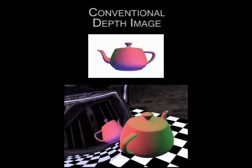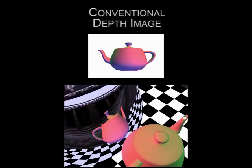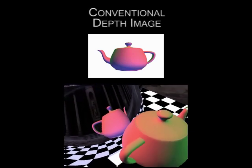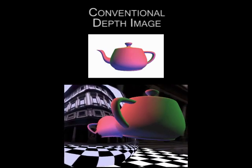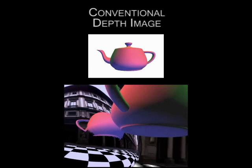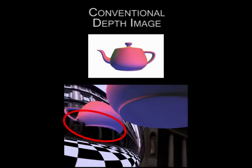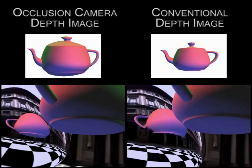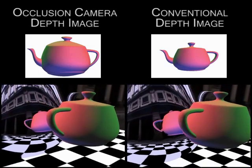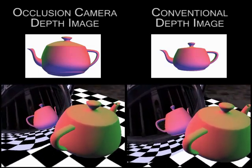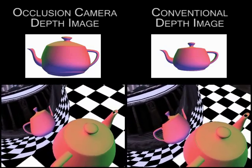Images are used to approximate geometry in interactive rendering. Here the reflected teapot is approximated with the conventional depth image. However, the depth image does not capture all samples needed by the reflection, which creates artifacts. We propose to use scene approximations constructed with non-pinhole cameras that gather most samples needed. Here the non-pinhole depth image captures the lid and bottom of the teapot and produces a quality reflection.